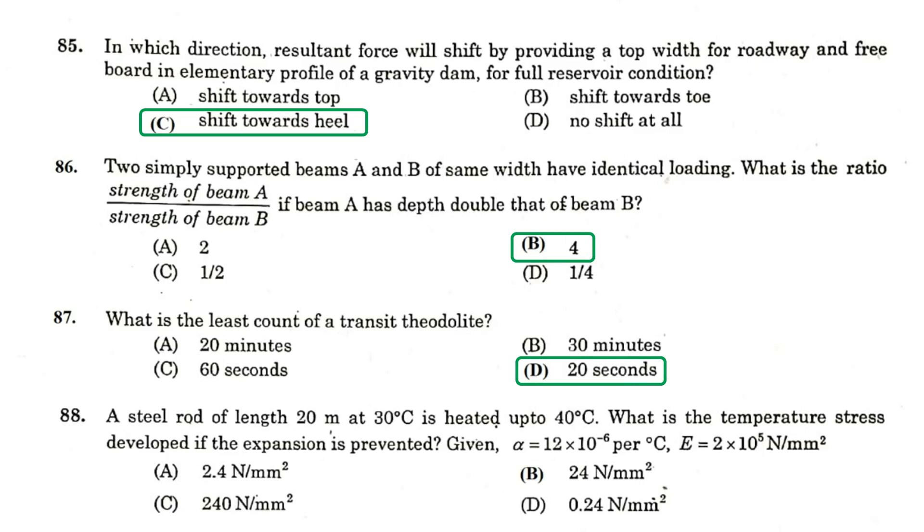A steel rod of length 20 meter at 30 degree Celsius is heated up to 40 degree Celsius. What is the temperature stress developed if the expansion is prevented given alpha is equal to 12 into 10 raised to minus 6 per degree Celsius and E is equal to 2 into 10 raised to 5 Newton per mm square.